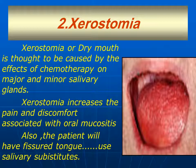The second manifestation is xerostomia, or dry mouth, which is thought to be caused by the effects of chemotherapy on major and minor salivary glands. Xerostomia increases the pain and discomfort associated with oral mucositis. Also, the patient will have a fissured tongue, and therefore these patients will need to use artificial salivary substitutes in order to decrease the effects of dry mouth.